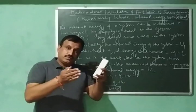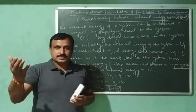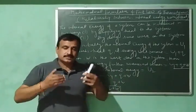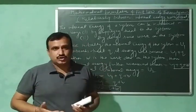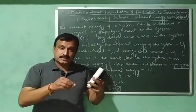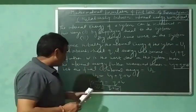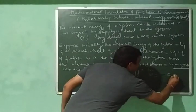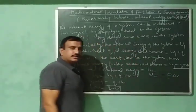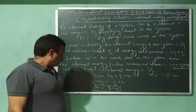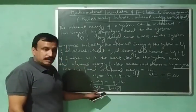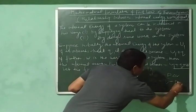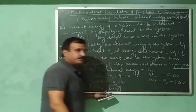Pressure-volume work is of two types: work done by the system is taken as negative, and work done on the system is taken as positive. Let us consider work of expansion, that is work done by the system. So here work done by the system will be negative, and work done by the system is W equals minus P delta V, where P is external pressure. If we substitute the value of W, then delta U equals Q minus P delta V.